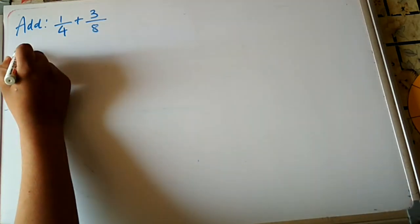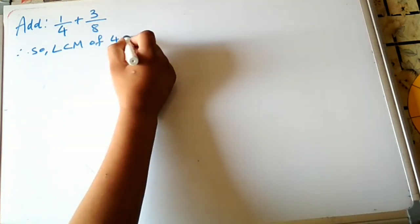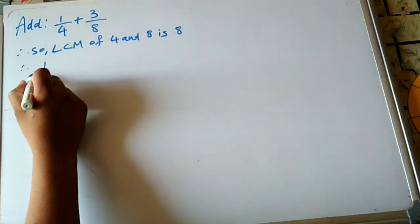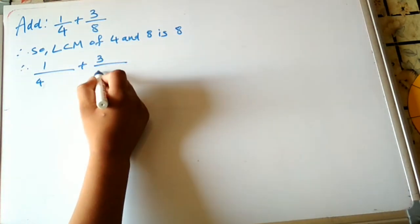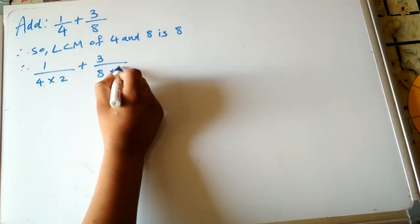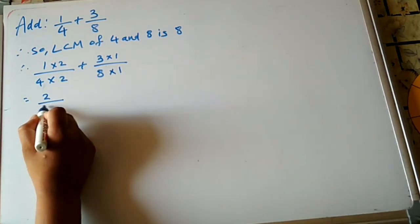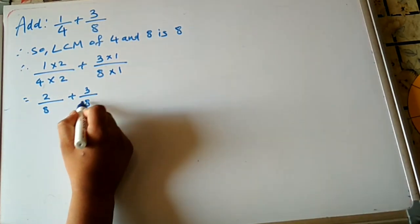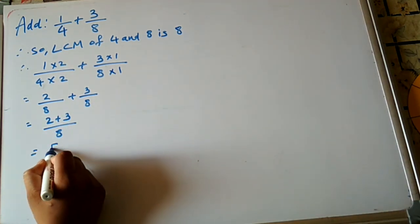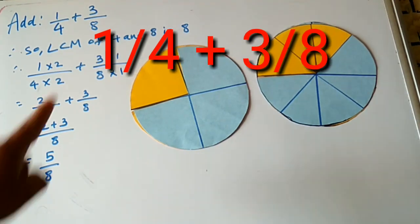Now here is the sum 1/4 + 3/8. We have to find the LCM. The LCM of 4 and 8 is 8, because 8 comes in the table of 4 and also in the table of 8. We write 4 × 2 and 8 × 1 in the denominator, so the numerator becomes 1 × 2 + 3 × 1, giving us 2/8 + 3/8. Now it is a like fraction: 2 + 3 upon 8 equals 5/8.